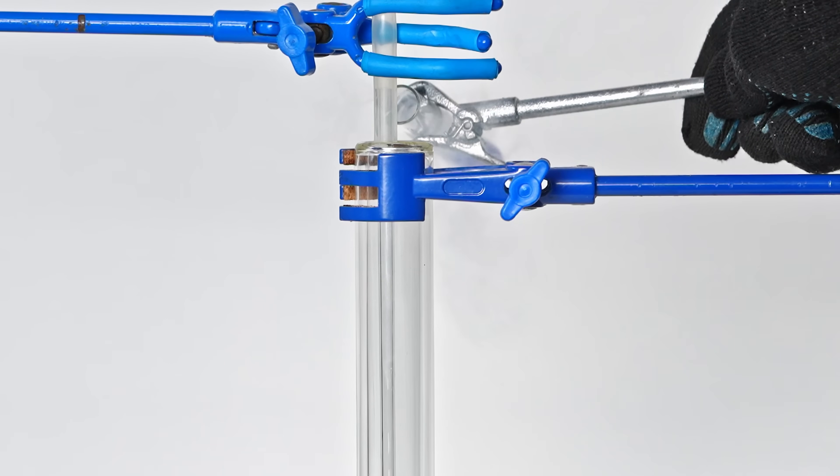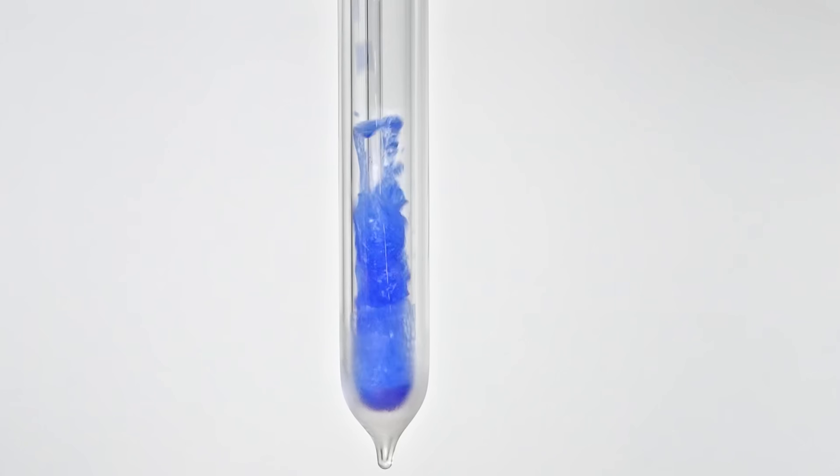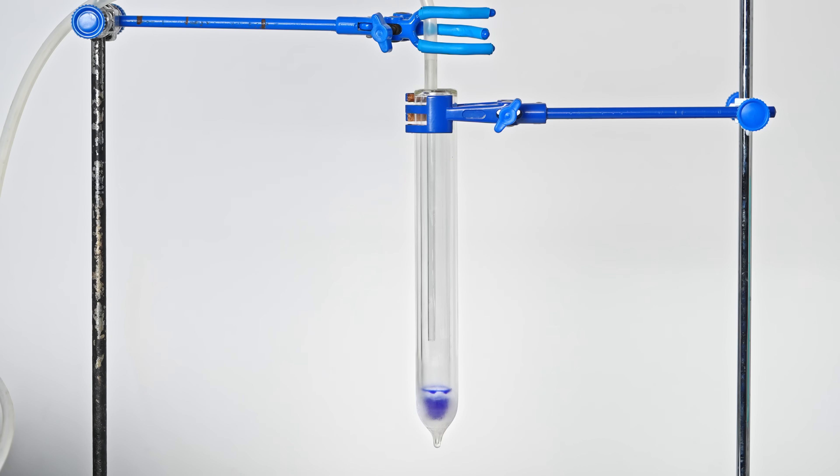Next, I used a DUER test tube, essentially a thermos tube that minimizes heat exchange with the environment. Adding ozonated oxygen to this test tube allows the oxygen to evaporate quickly, leaving behind extremely dangerous liquid ozone.